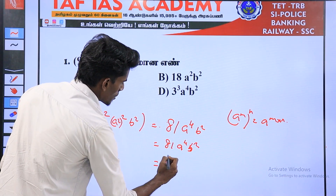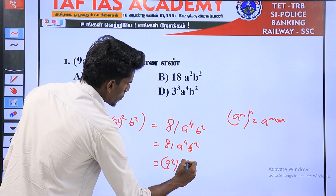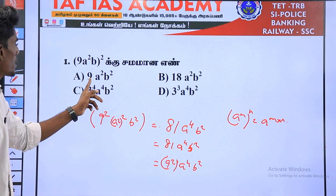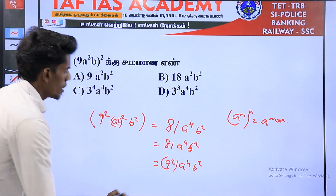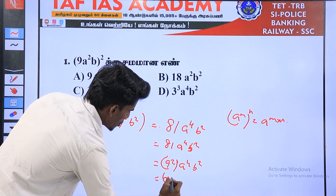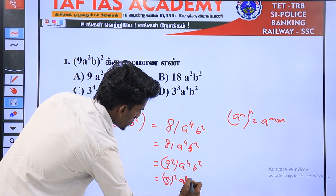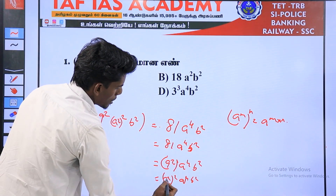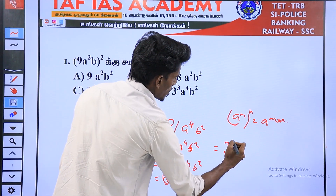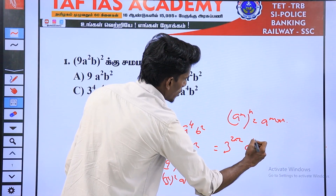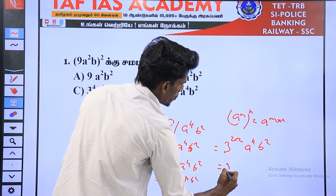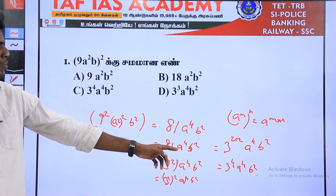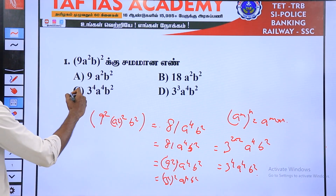9 squared is 8 to the power 4 b squared. We have a 3. 3 square to the power square, a to the power 4, b square. We have a to the power m to the power n is equal to a to the power m into n. 3 square to the power square is equal to 3 to the power 2 into 2, a to the power 4, b square. That gives 3 to the power 4, a to the power 4, b square. Option C is the answer.